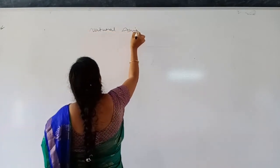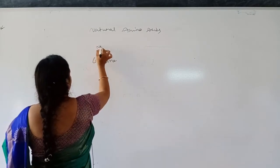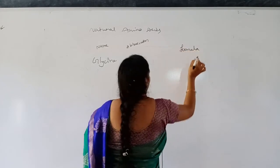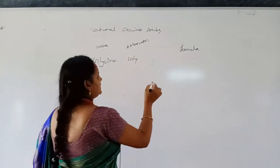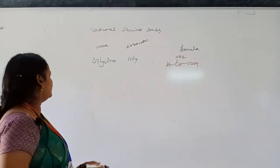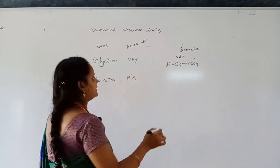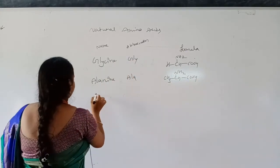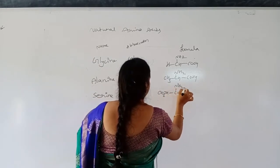Natural amino acids. First one: glycine, abbreviated as GLY, formula: H-CH(NH2)-COOH. Next, alanine, abbreviated as ALA, formula: CH3-CH(NH2)-COOH. Next, serine, abbreviated as SER, formula: CH2OH-CH(NH2)-COOH.